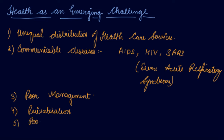Fifth: Poor upkeep and maintenance. Government healthcare centers have very poor maintenance, and there is a big difference in quality between private and public hospitals. When someone is suffering from a severe disease and cannot be helped adequately, they are suggested to go to private hospitals, because government hospitals do not maintain themselves to the quality level of private hospitals.